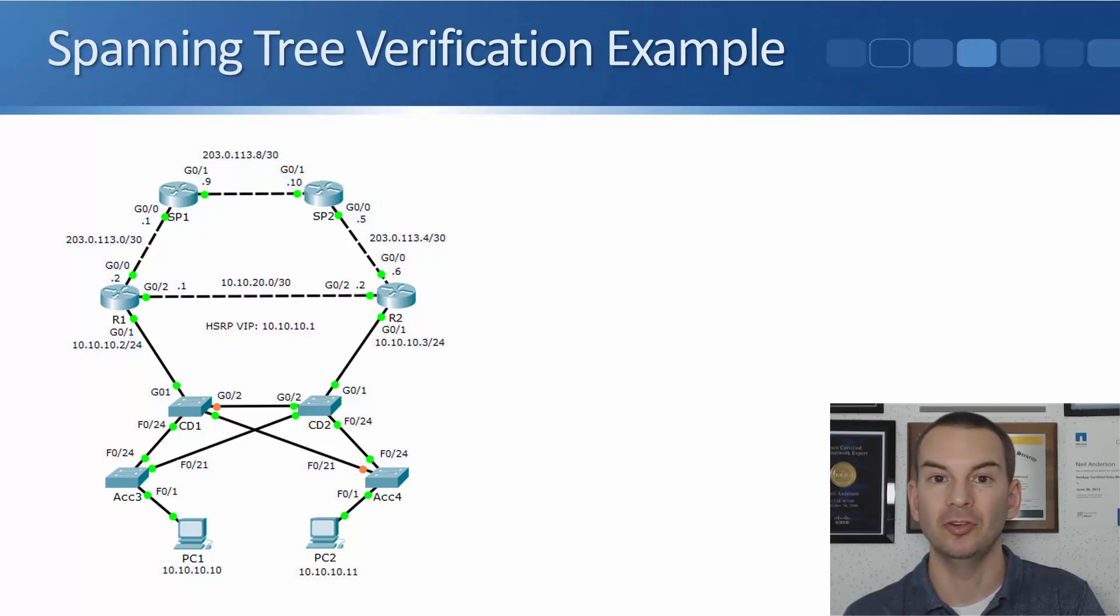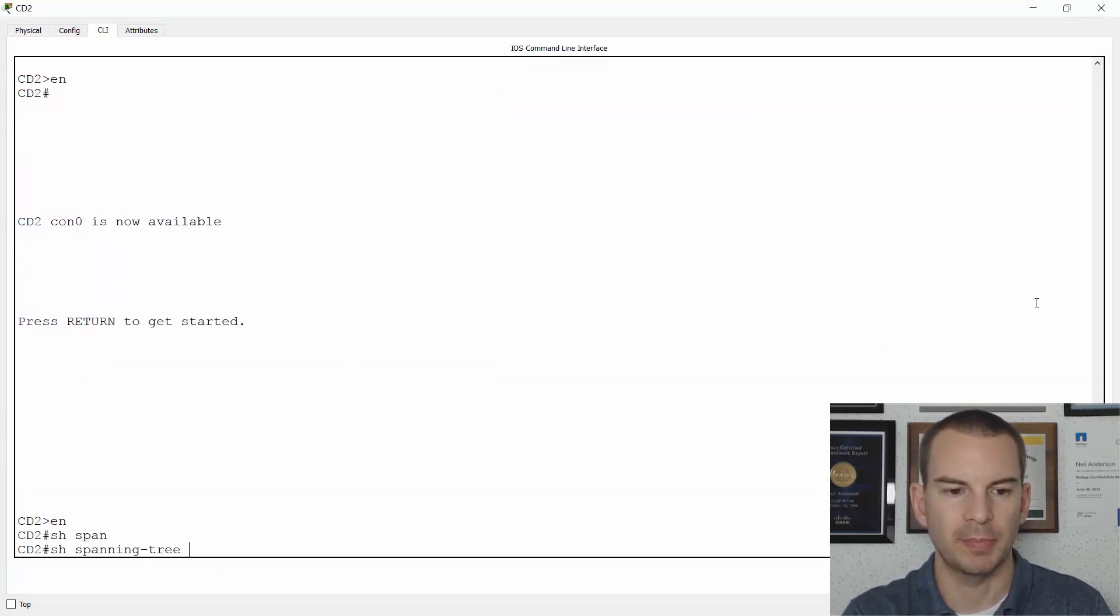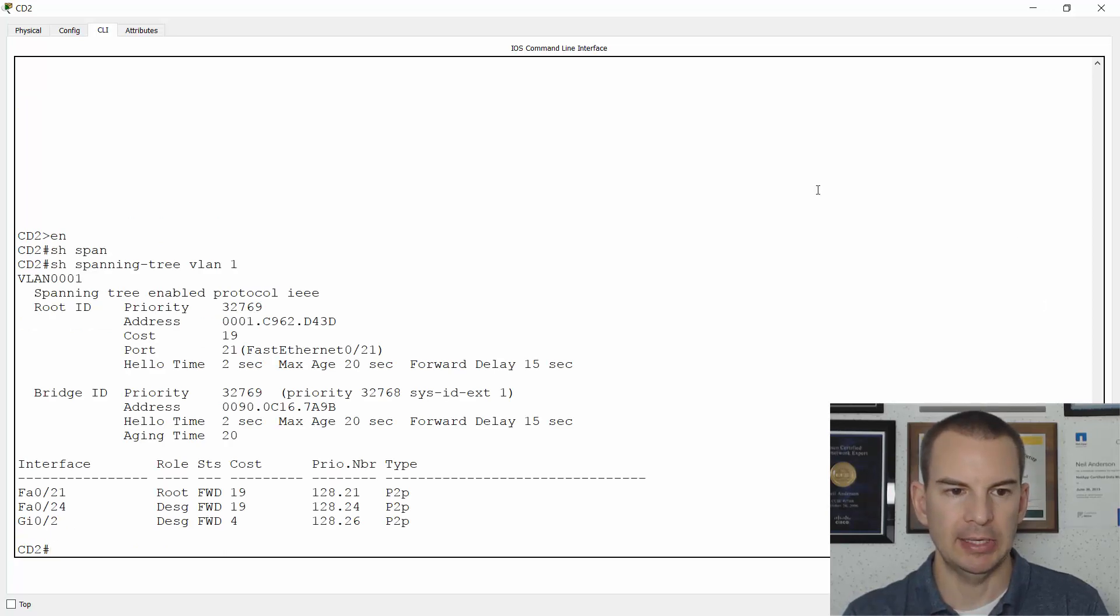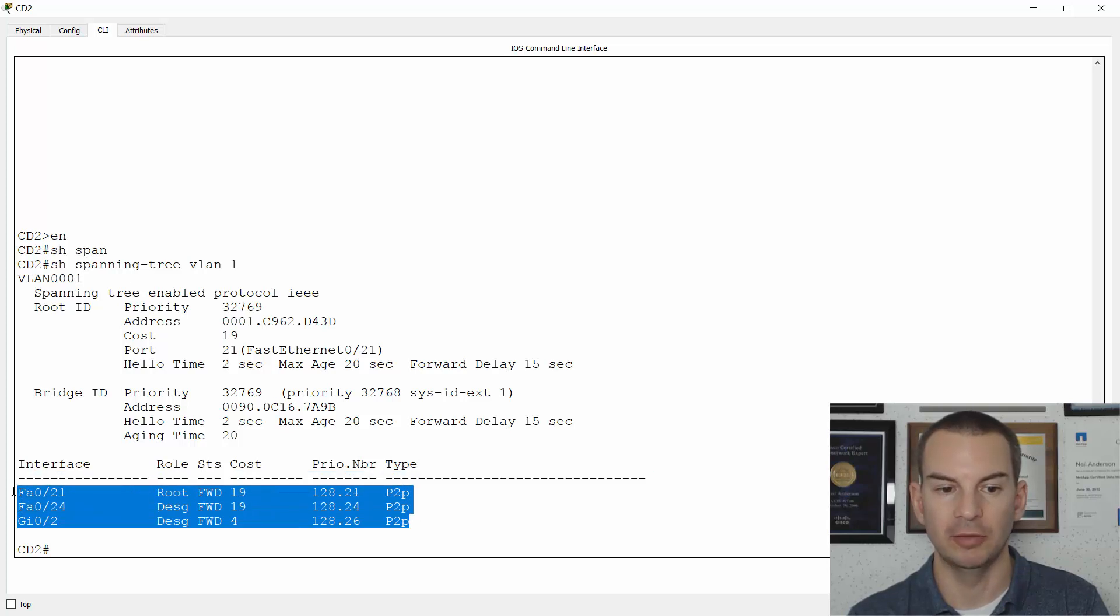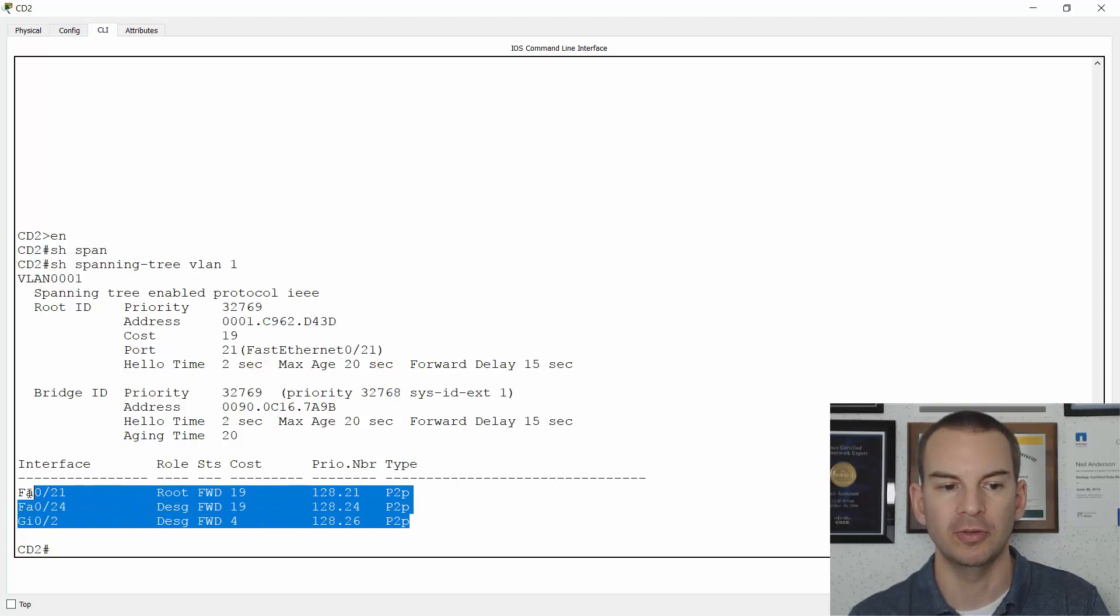Okay, so that was CD1. If we look at the topology diagram again, let's also have a look at CD2. And on CD2, all its interfaces should be forwarding. So let's jump into the lab to see this. I will go to my enable prompt and show spanning tree for VLAN 1. And in here, I can see that it agrees that the root bridge is access 3, ending with MAC address D4 3D. This switch's MAC address also begins with 0090, so it's a higher MAC. That's why it was not selected as the root bridge. All of my switches are running the default priority of 32768. For this switch to get out to the root bridge, it uses interface FastEthernet 0.21, and the cost is 19. I can see all of my ports that are connected to other switches down at the bottom here. And Fast0.21, again, is the root port. The other two ports are designated ports, so all of these ports are forwarding.